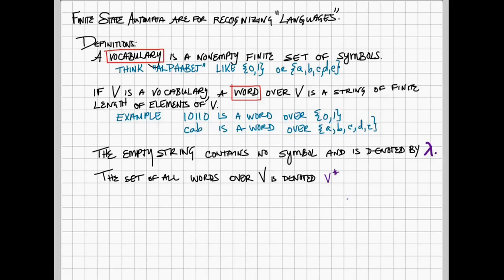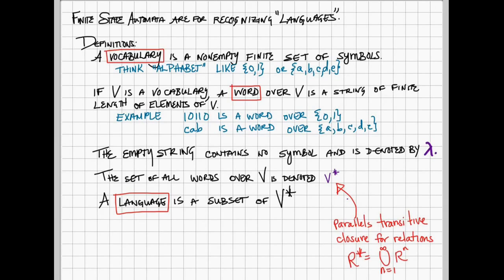So it has to be a finite string of vocabulary symbols. But that's sort of our superset. Languages are then subsets of V star. And V star, the star ought to be a little bit reminiscent of something you did back in 321 when we looked at the closure for the transitive relation.